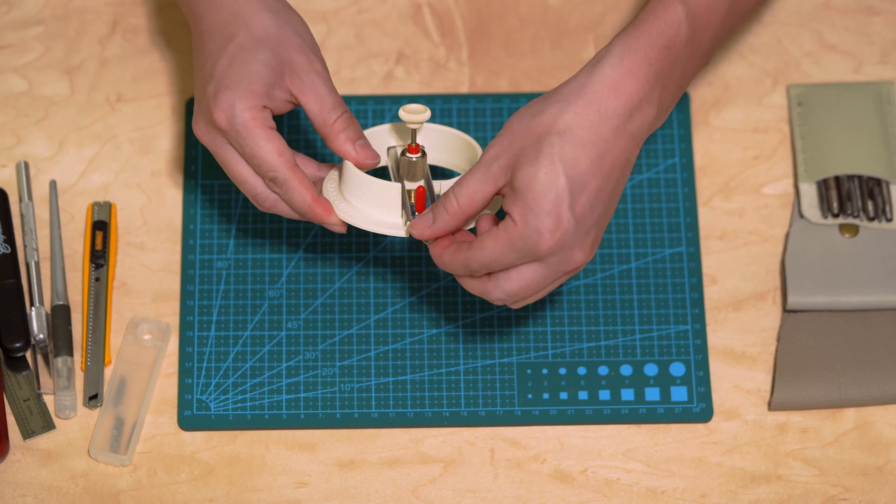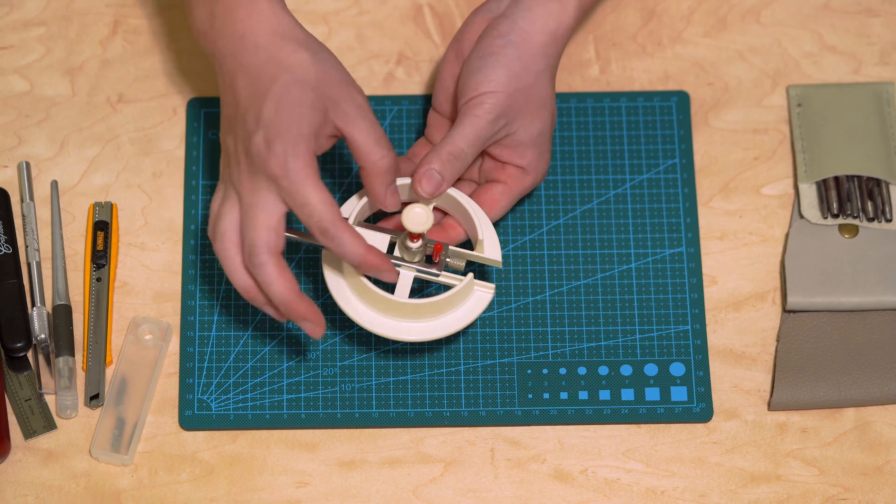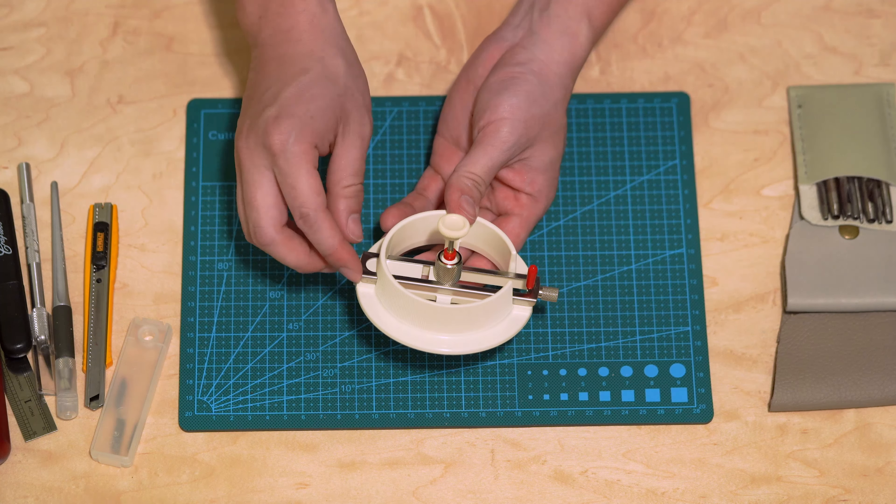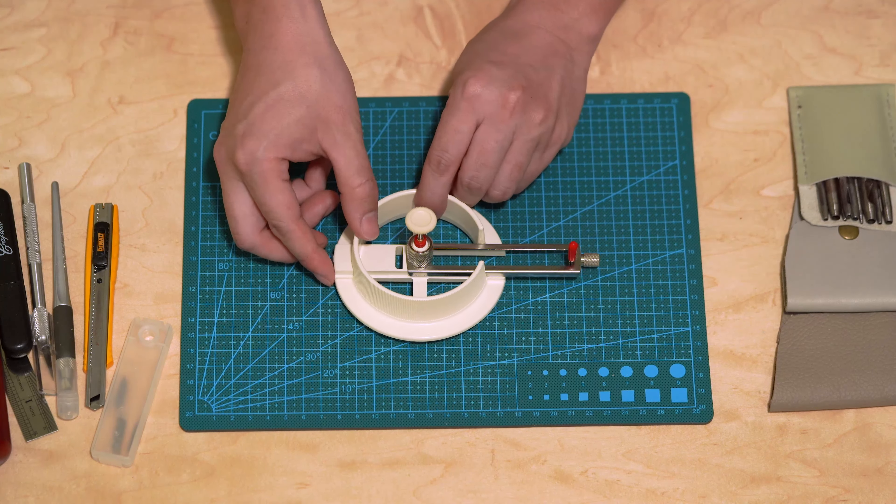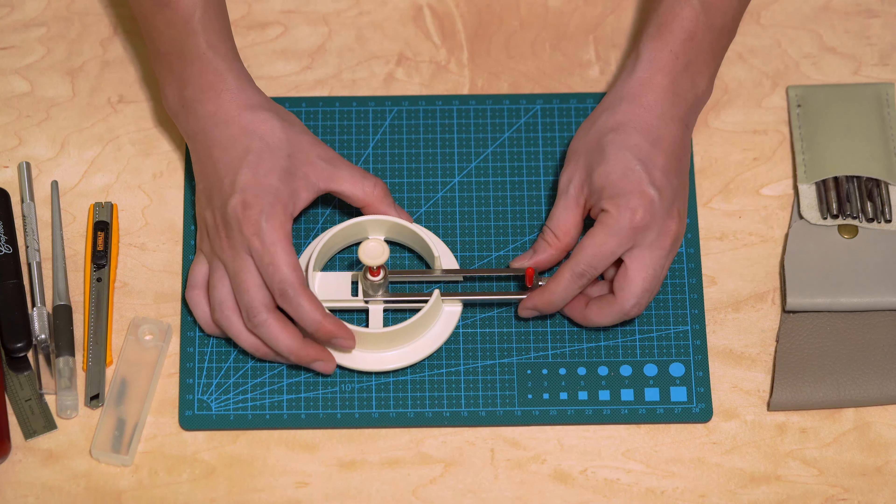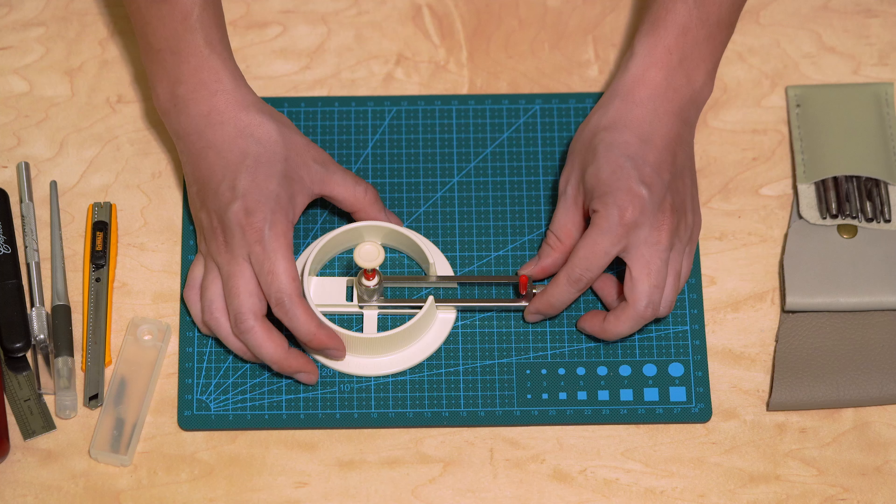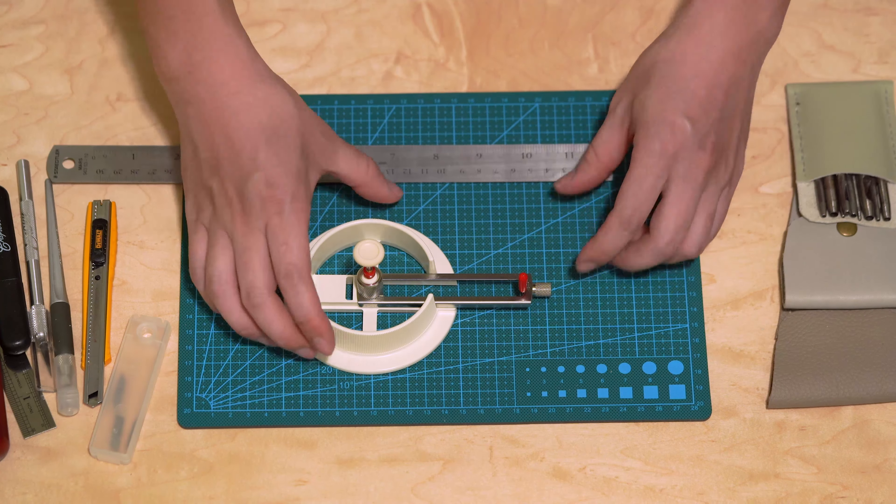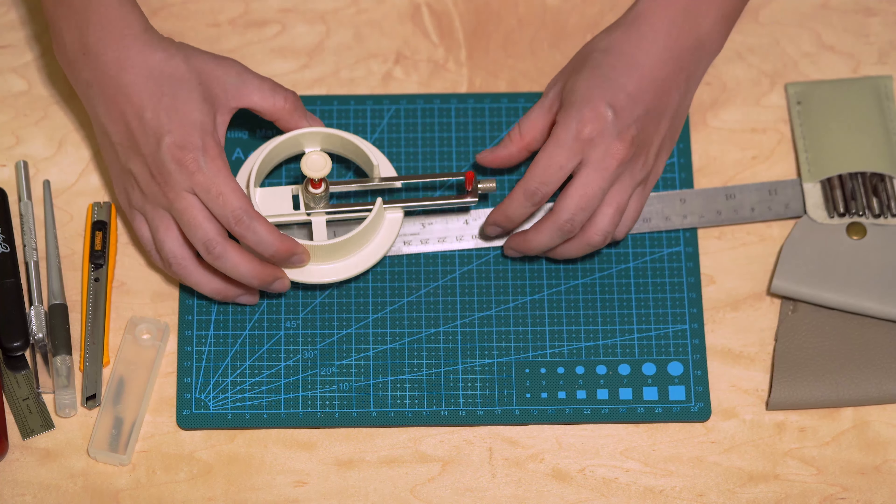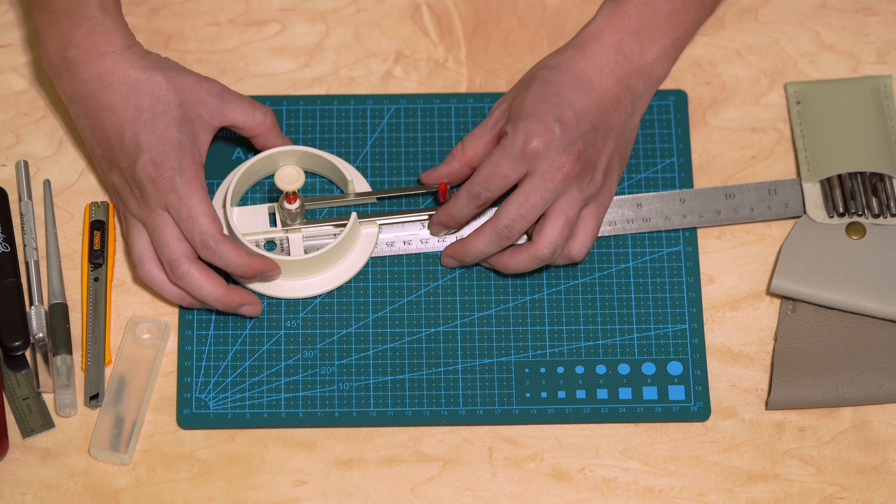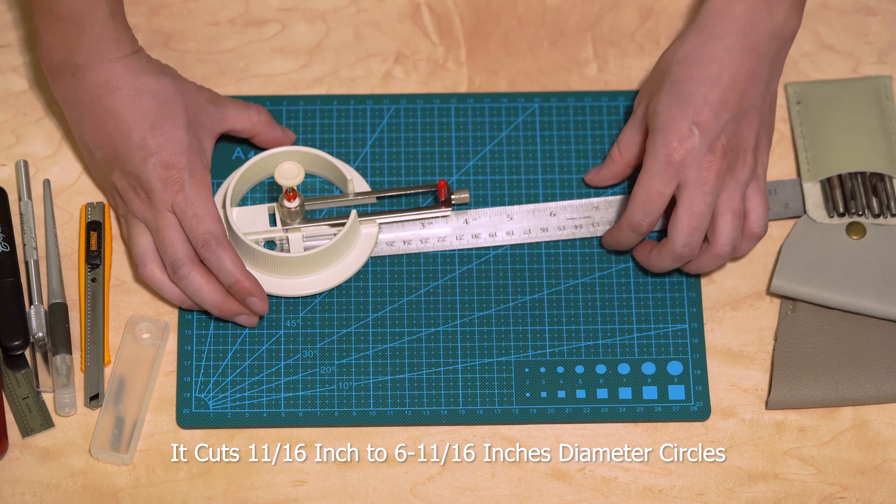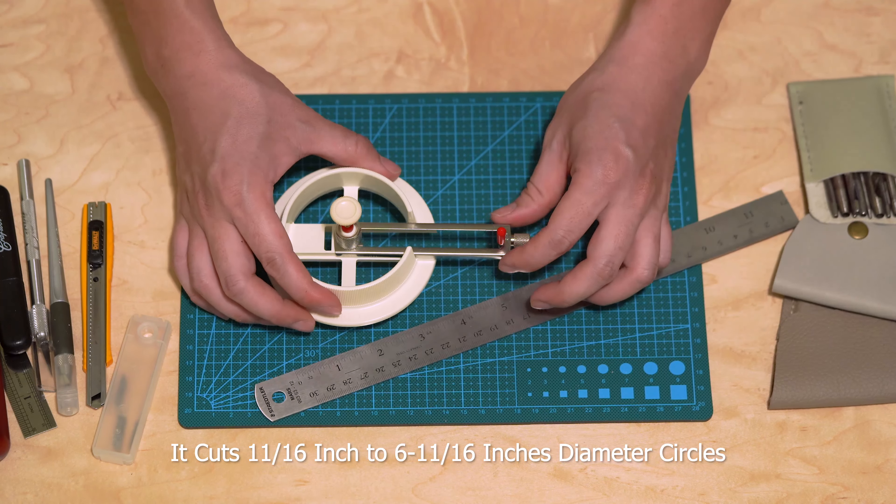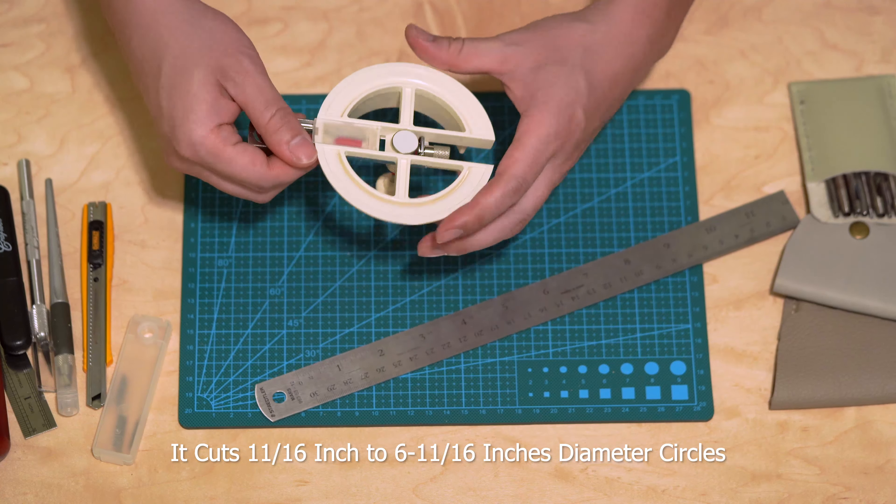This knob controls the diameter of the circle that you can cut. So the furthest, obviously as you can see it cuts a very very wide, let's see how long it is, so almost like 8.5 centimeters. Let's just do a quick measurement. It cuts to about 3.5 inch circle max, I would say 3.4 inch max. That's the size it can cut on the largest part.